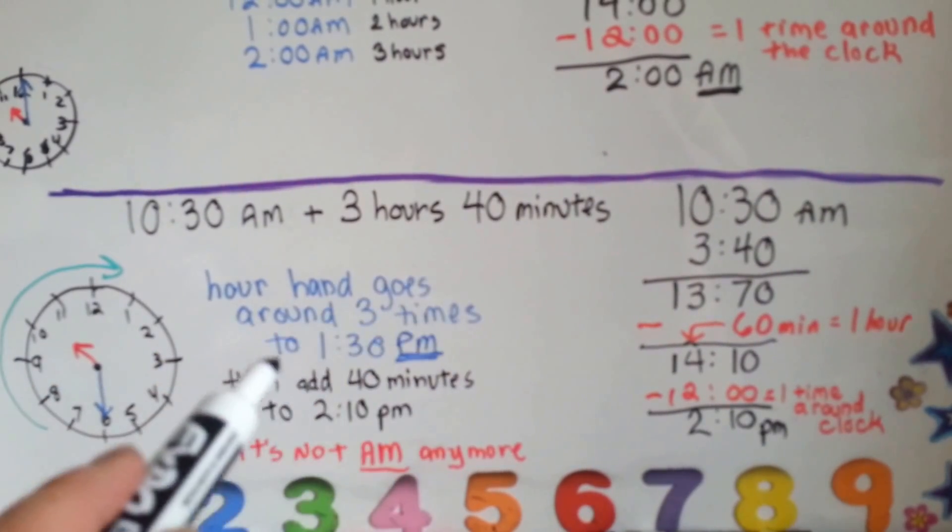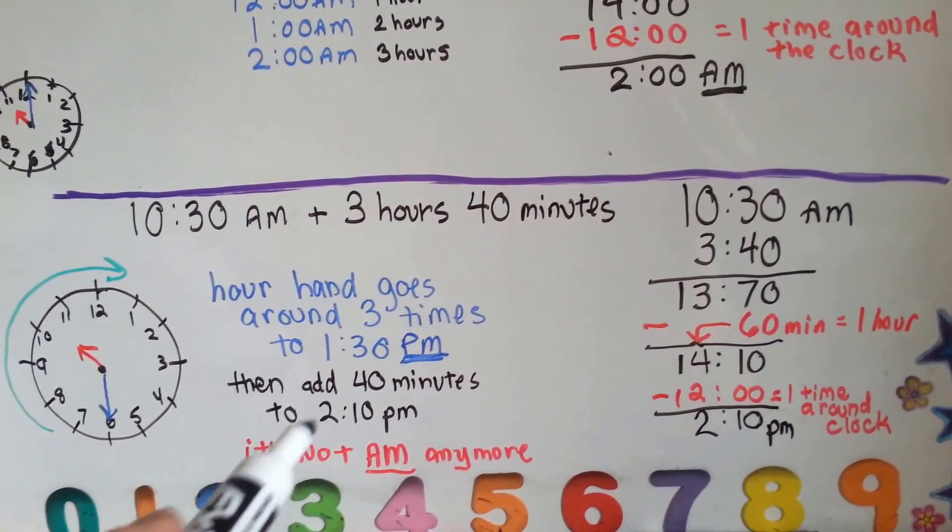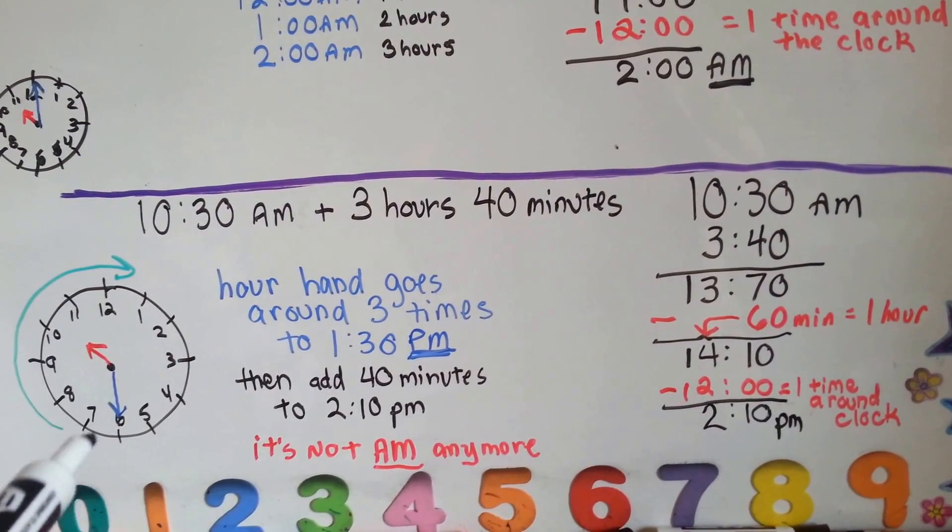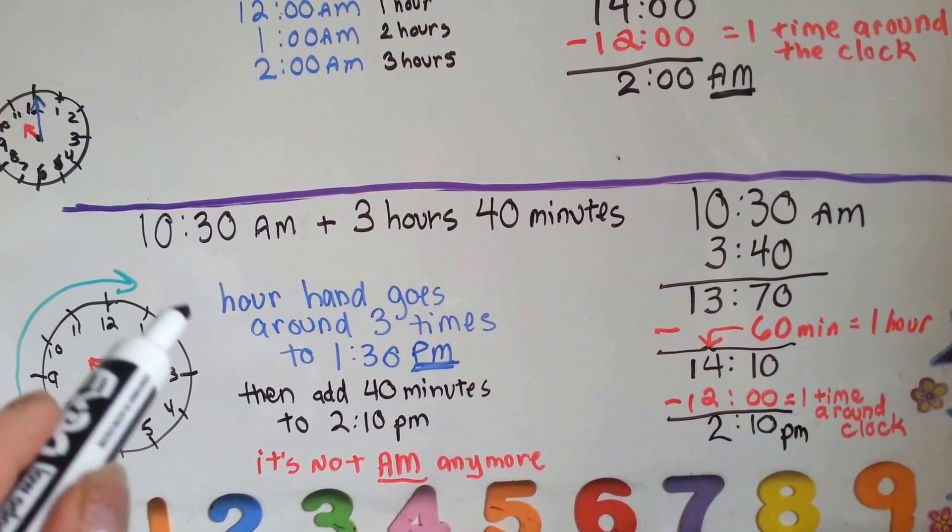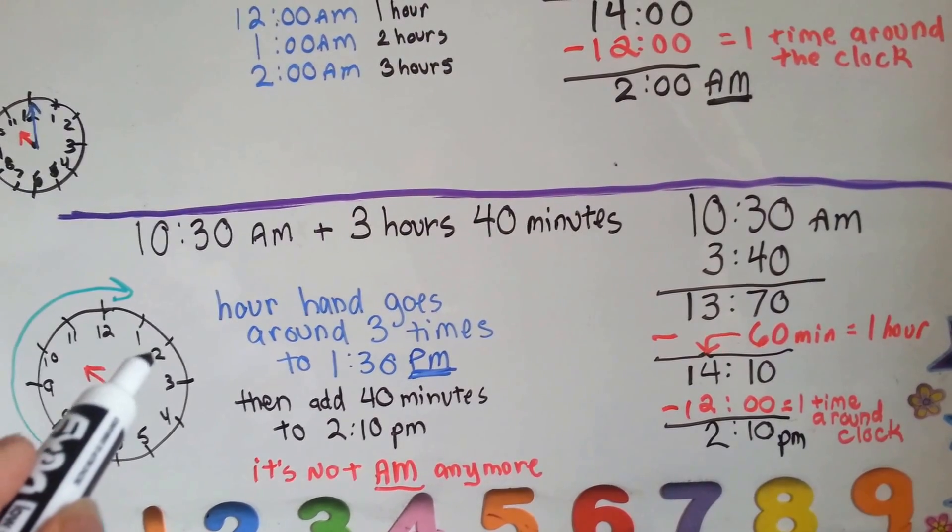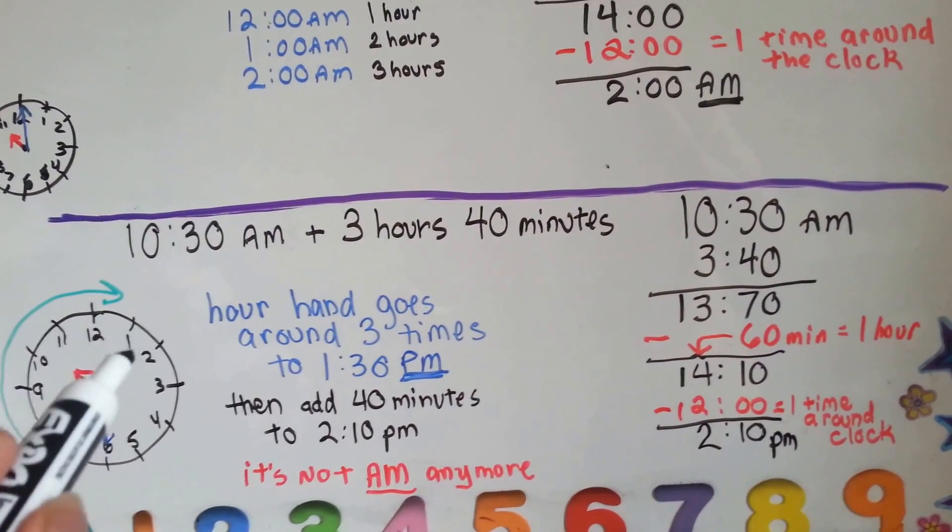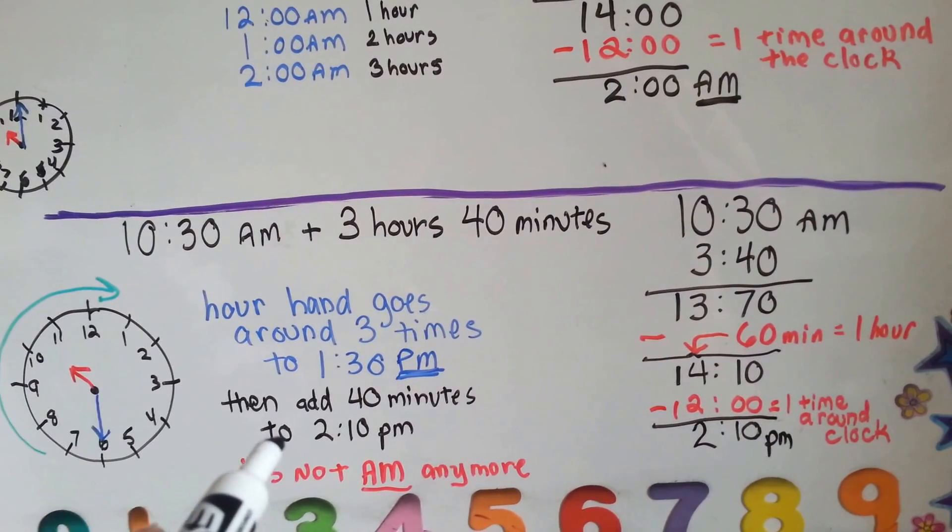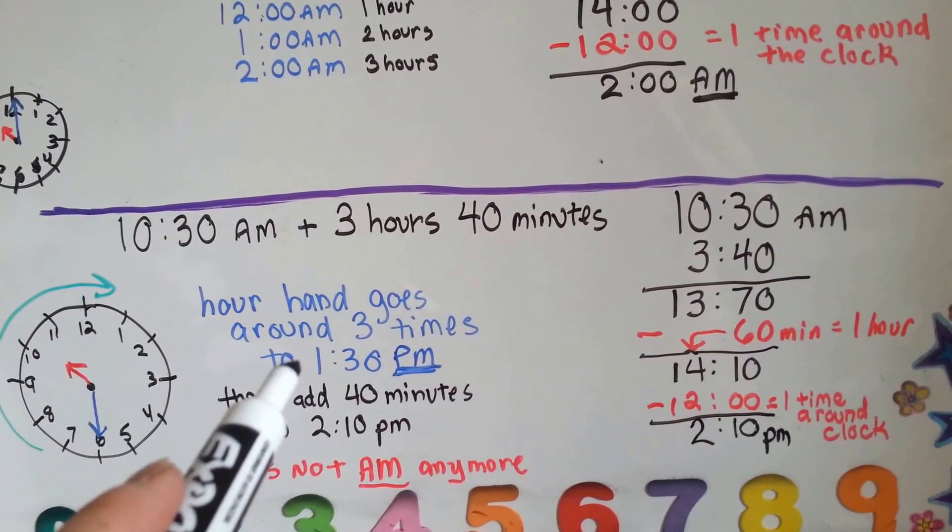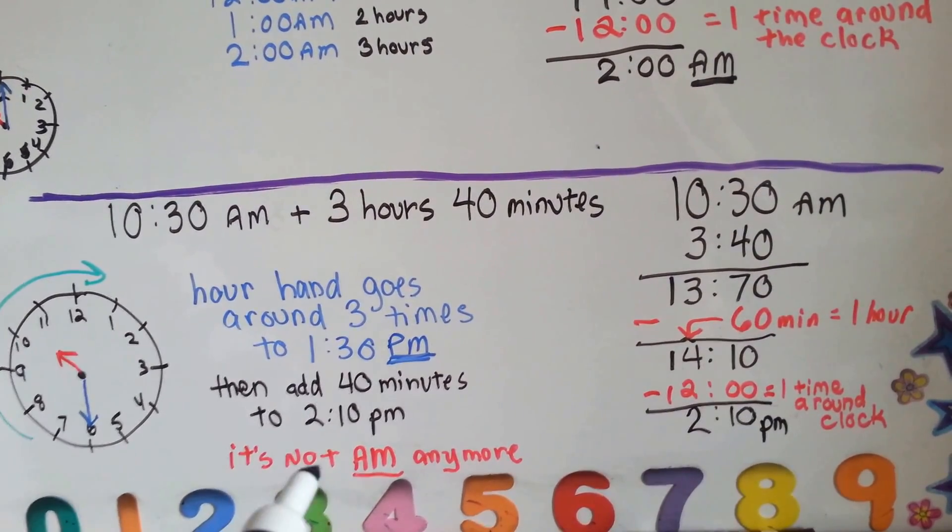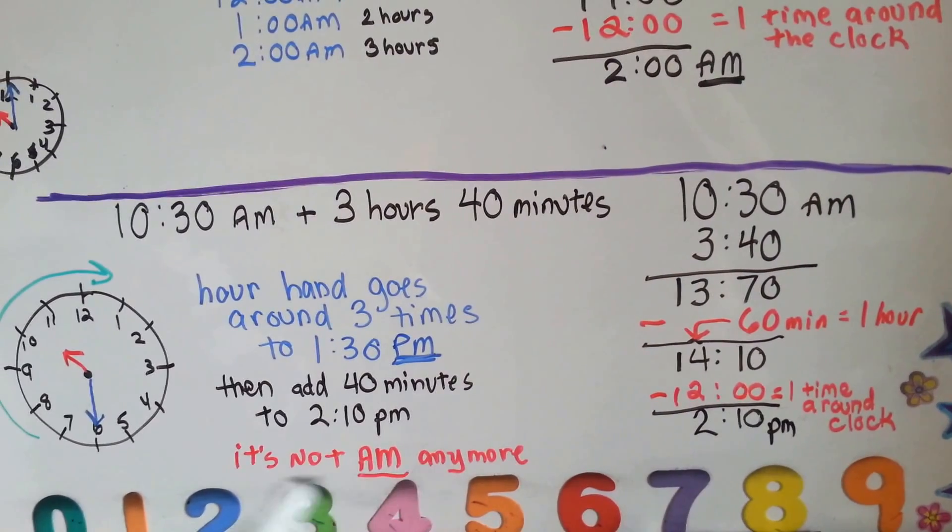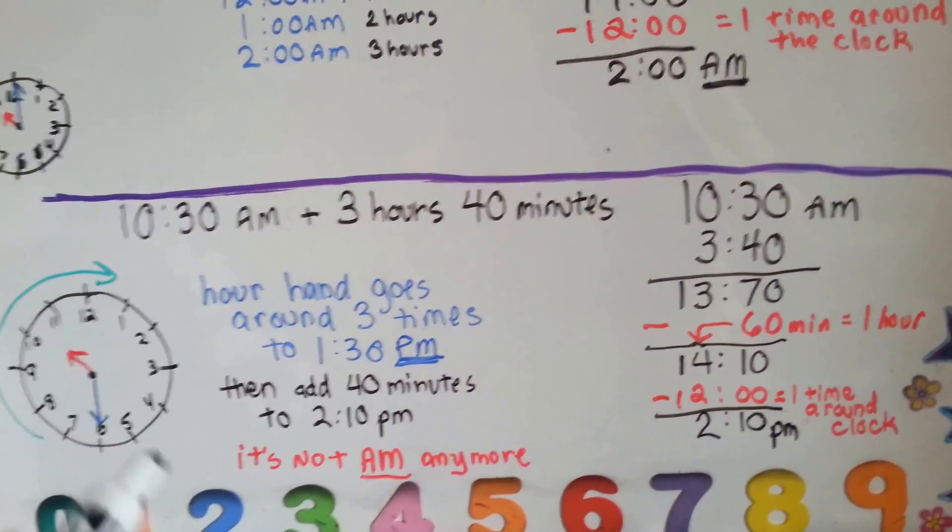Now, if we add the 40 minutes to 1:30 PM, it's going to go 5, 10, 15, 20, 25, 30, 35, 40, and it's going to be on the 2, the minute hand is going to be on the 2, which is 10 minutes. So, that'll change it from 1:30 PM to 2:10 PM, and it's not morning anymore. It's not AM anymore. It turned to PM when it passed the 12.